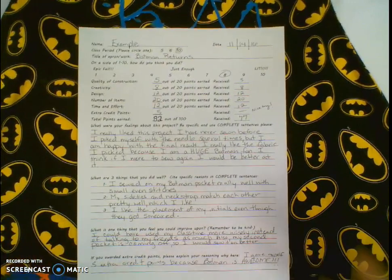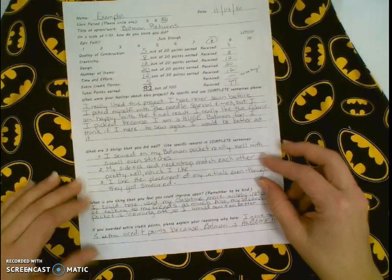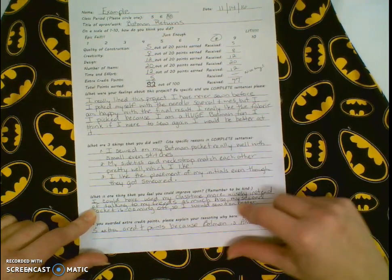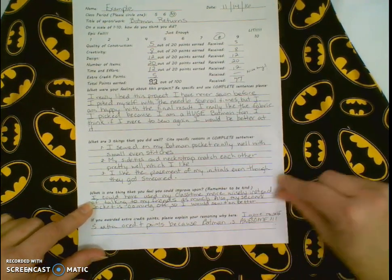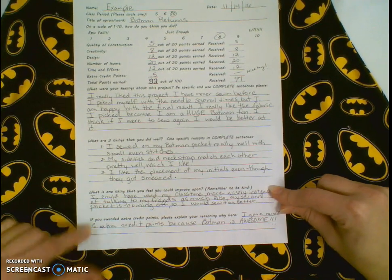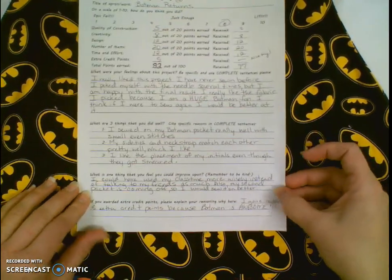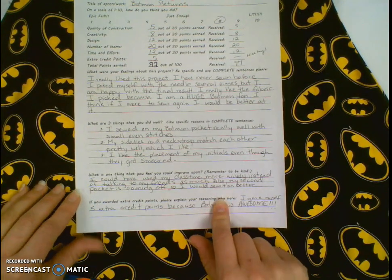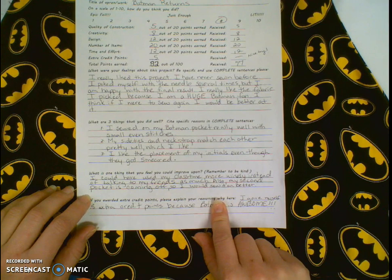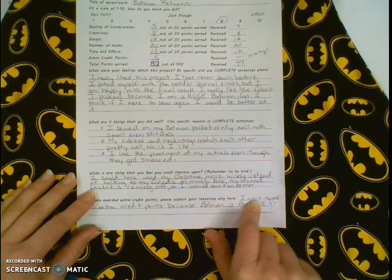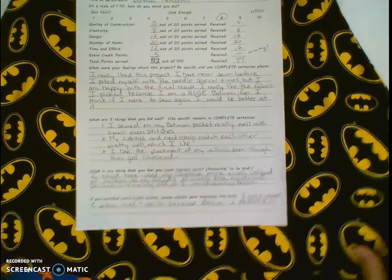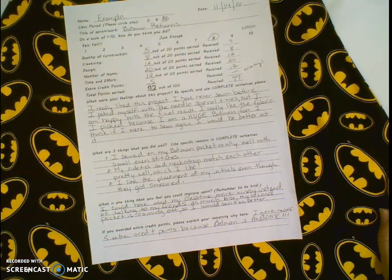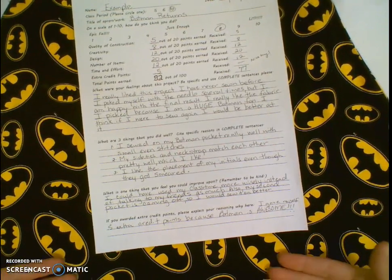The next question is what is one thing that you feel you could improve upon? Remember to be kind. Even though it doesn't say use a complete sentence, I'm going to expect you to use complete sentences here as well. I could have used my class time more wisely instead of talking to my friends as much. Also my second pocket is coming off so I would sew it on better. Those are things that you could do to improve your apron. You could also include things like sew across the top of the apron, choose some straps that match your Batman fabric a little bit better.